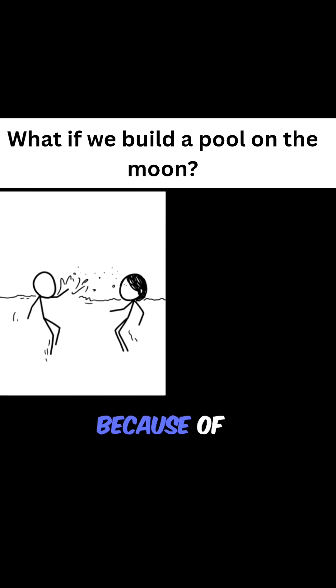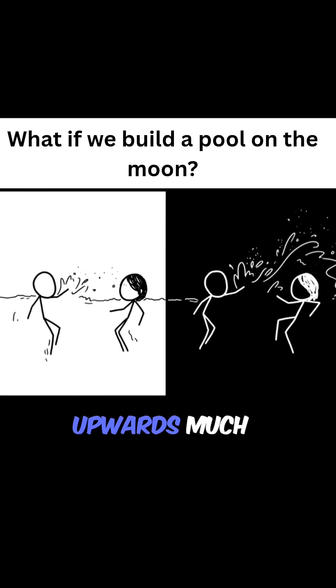Then we get to waves and splashes. Because of the reduced gravity on the moon, the water would be launched upwards much more easily, just like the swimmers. The result would be larger waves and more flying droplets. In technical terms, a pool on the moon would be more splashy.